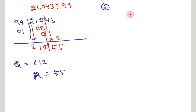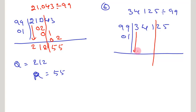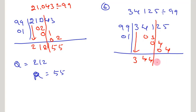The sixth problem is 34,125 divided by 99. Let us arrange this dividend and divisor. Take down the Nikhilam of 99: 0, 1. Separate our dividend by taking a straight line after the 10s place. Write down the first digit, that is 3. 3 into Nikhilam is 0, 3. Adding, you get 4. 4 into Nikhilam is 0, 4. Adding, you get 4. Now 4 into Nikhilam is 0, 4. Adding all, you get 69. So you get a quotient of 344 and remainder is 69.